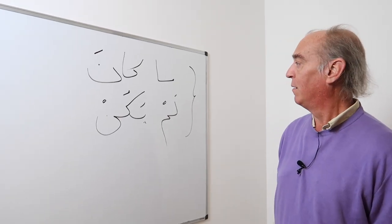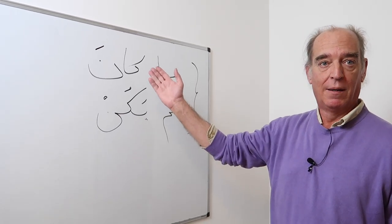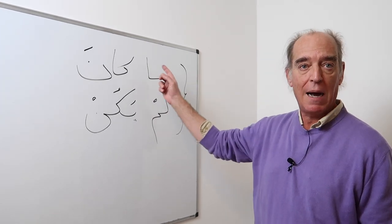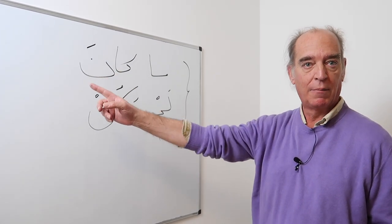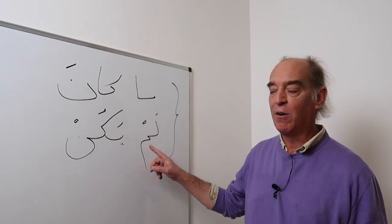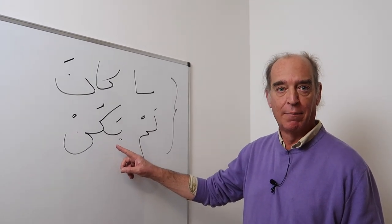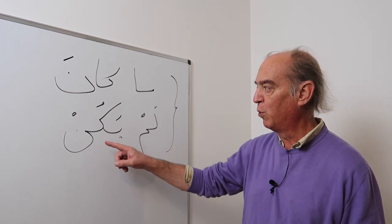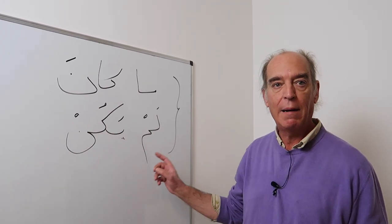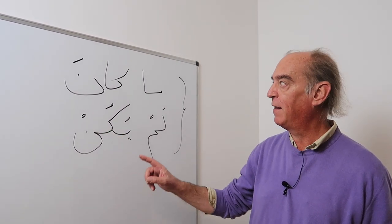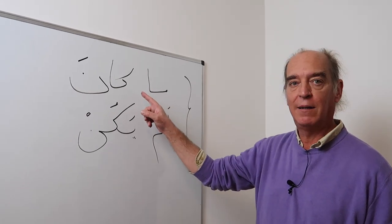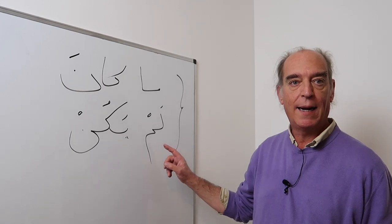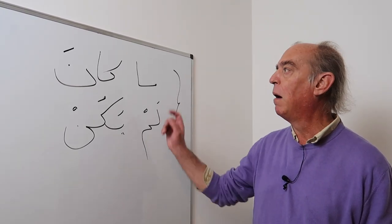Now you're wondering how to say 'he was not.' You have two possibilities. The simplest one is to use the negation ma: ma kana, he was not. The second is lam followed by the jussive mode, which ends in sukun: lam yakun, he was not. You will find the first possibility easier, of course, but this form is considered more elegant — it's lighter than ma kana.